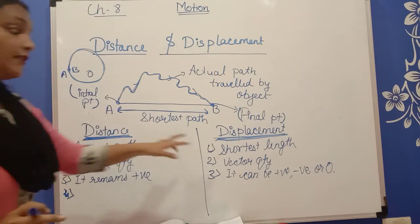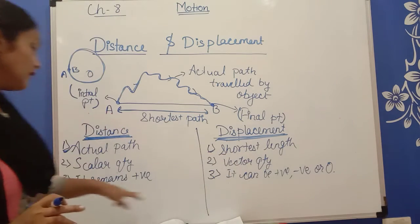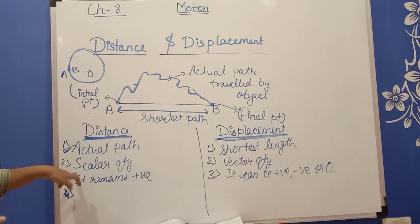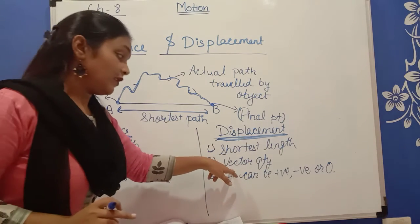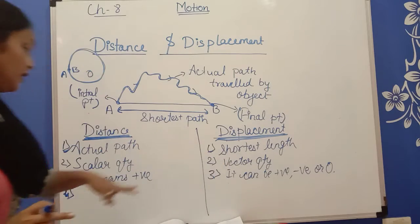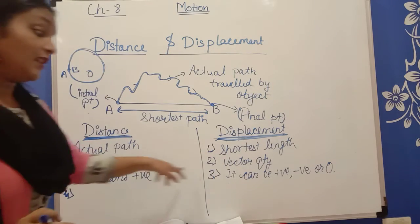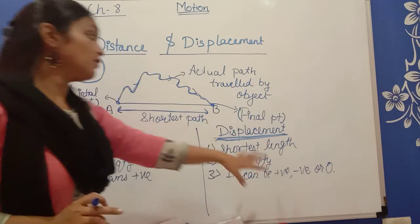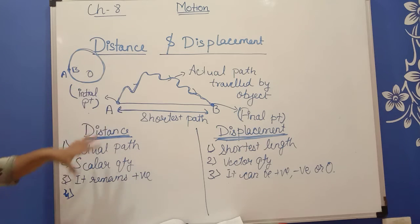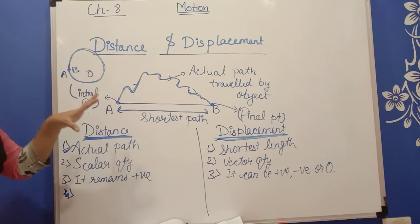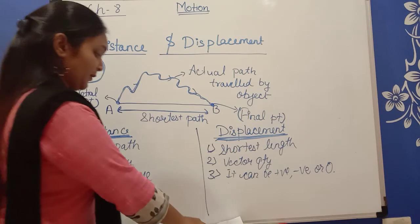The difference between distance and displacement: distance is the actual path, displacement is the shortest length. Distance is the scalar quantity, displacement is the vector quantity. Distance remains positive always; displacement can be positive, negative, or zero. Today we completed what is distance and what is displacement.